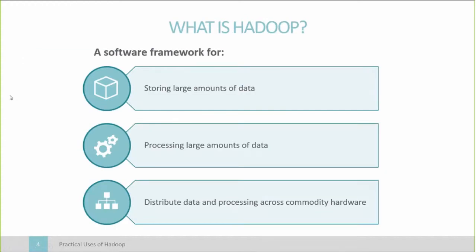So what is Hadoop? At the highest level, Hadoop is a software framework for storing and processing massive amounts of data. To achieve this, Hadoop distributes both the data and the processing power across commodity hardware — and commodity hardware really just means everyday, cheap, simple servers. Nothing fancy, nothing incredibly powerful.